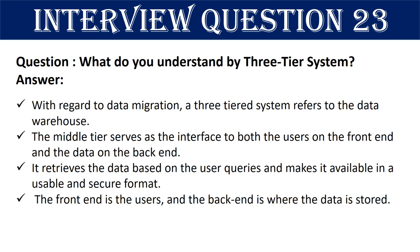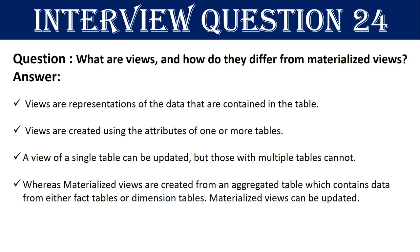Question 23: With regard to data migration, what is referred to as a three-tier system? A three-tiered system refers to the data warehouse architecture. The middle tier serves as the interface to both the users on the front end and the data on the back end — it retrieves data based on user queries and makes it available in a usable and secure format. The front end is the users; the back end is where the data is stored.